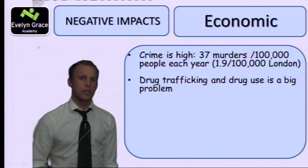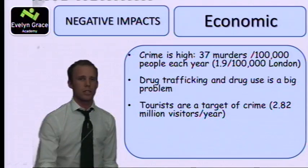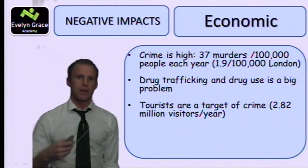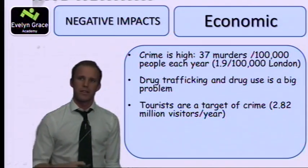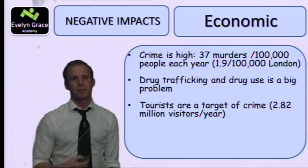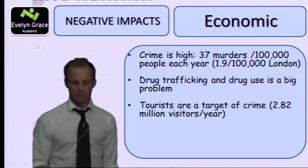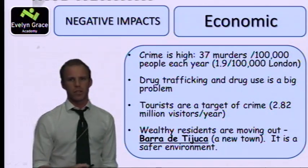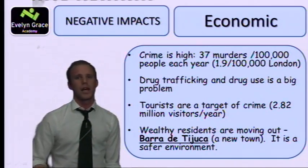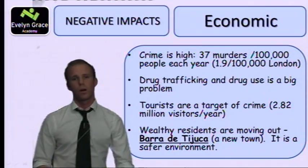Drug trafficking and drug use are big problems, with costs of policing and clearing up. This has impacted the tourist industry — with 31 miles of beaches, Rio attracts 6.82 million visitors per year, which is huge for the economy. If tourists are targeted by crime, that could have a massive impact on money coming into the city. Wealthy residents are also moving out to a safer area called Barra da Tijuca, so money is leaving Rio, leaving poorer communities in the centre that cost more and more to police and look after.